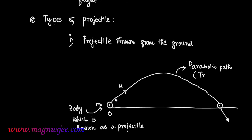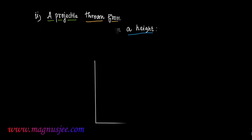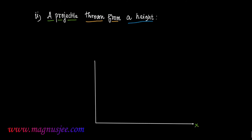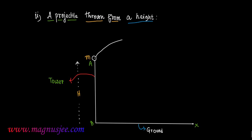Now we can draw the diagram of a projectile thrown from a height. AB is a building or tower of height h. From the highest point A of the tower, a projectile of mass m is thrown at an angle theta with the horizontal. The projectile is thrown with initial velocity u at angle theta with the horizontal.